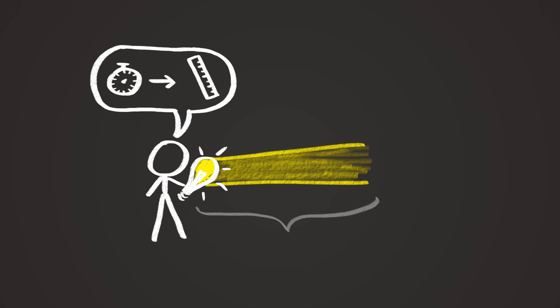Once we have clocks, we can do distances. Just tell the aliens to see how far light goes in one 299,792,458th of a second. That's what we call a meter.